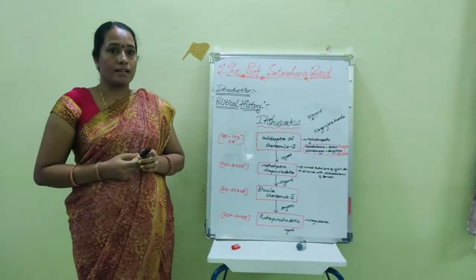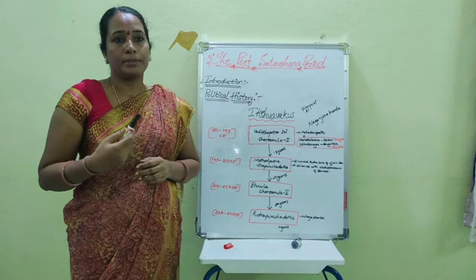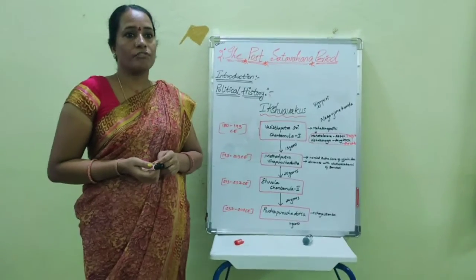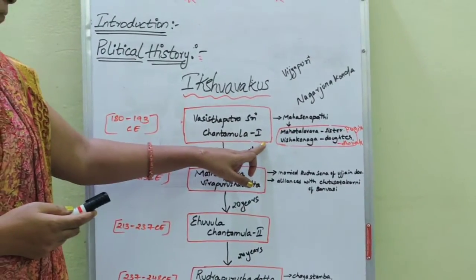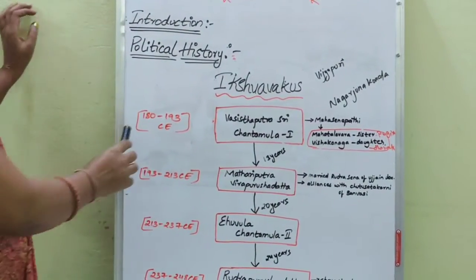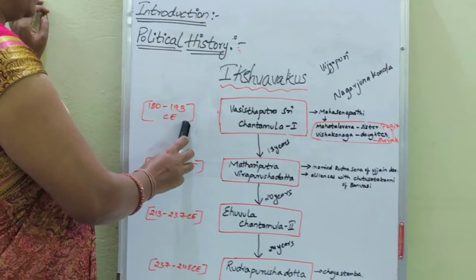Nagarjuna Konda was their capital. The first king of the Ikshvaku dynasty was Vasisthi Putra Sri Shantamula I, period 182-193 CE.